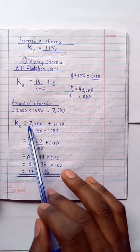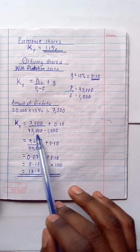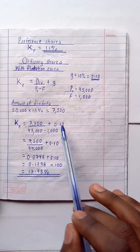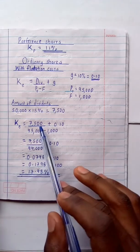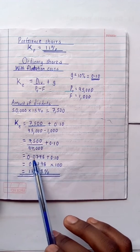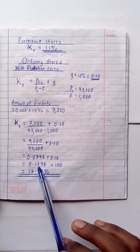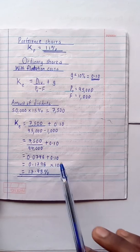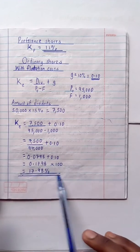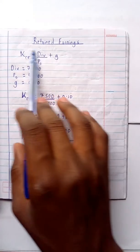Substituting: cost of equity = 7,500 ÷ (95,000 − 1,000) + 0.10 = 7,500 ÷ 94,000 + 0.10 = 0.0798 + 0.10 = 0.1798. Multiplying by 100 gives 17.98%, which is the cost of equity (ordinary shares).